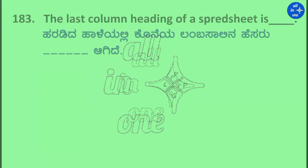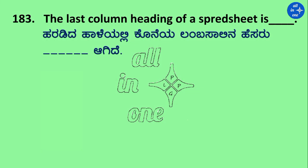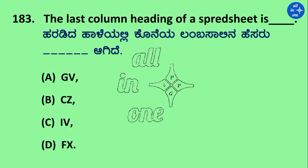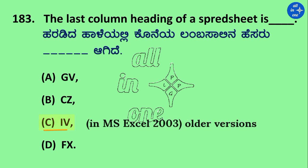Question: The last column heading of a spreadsheet is dash. Options: GV, CZ, XFD, and FX. Right answer is XFD.